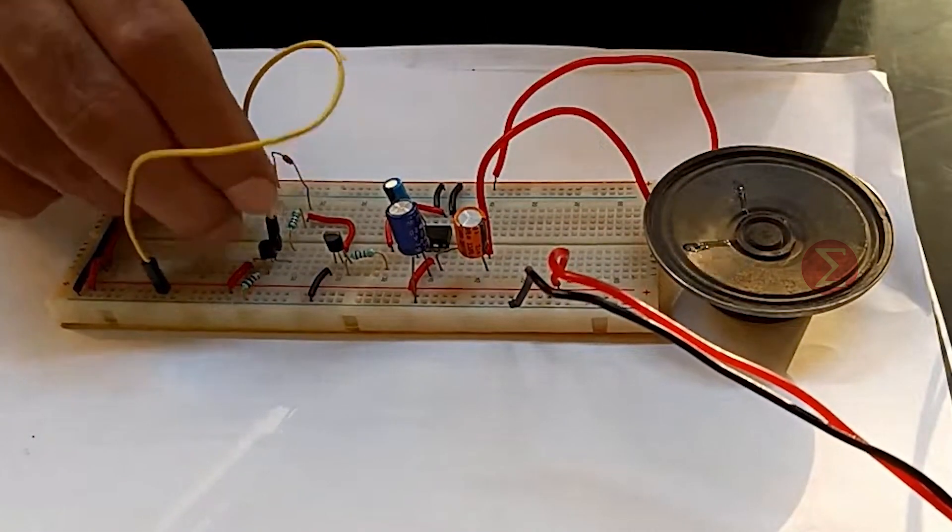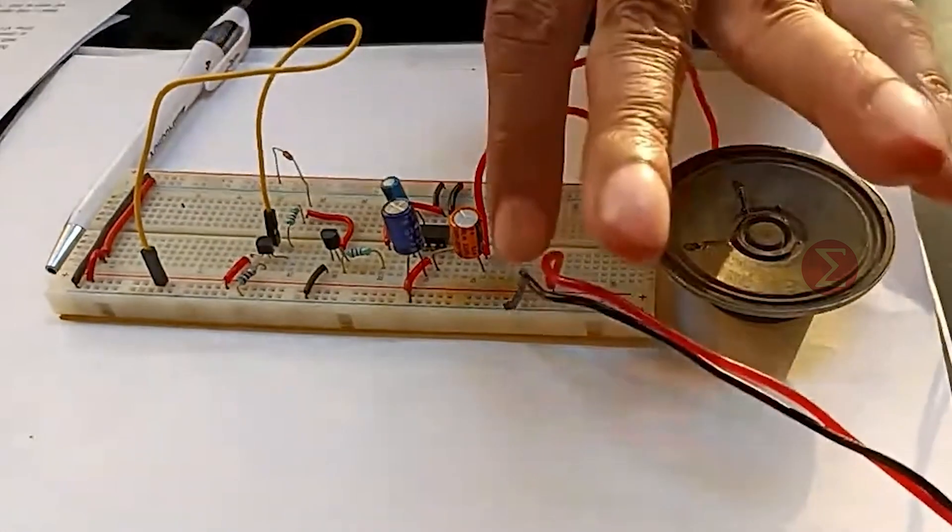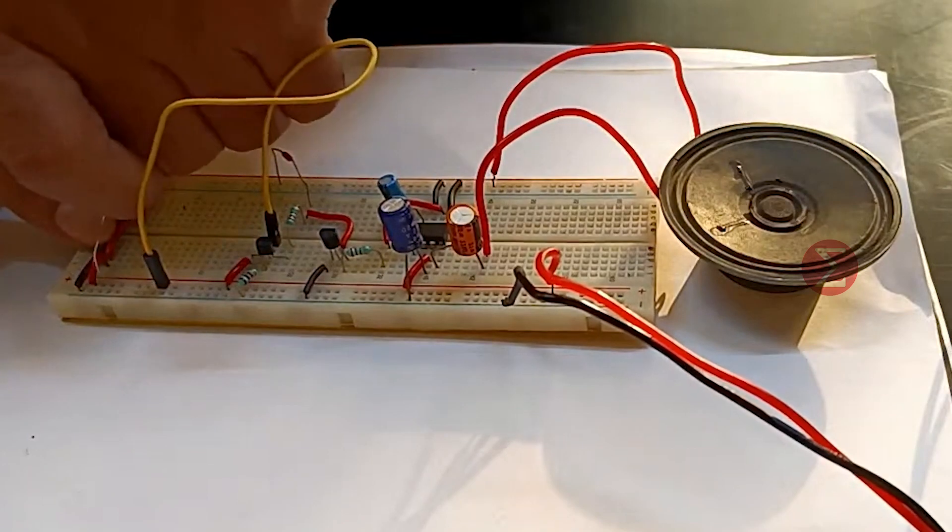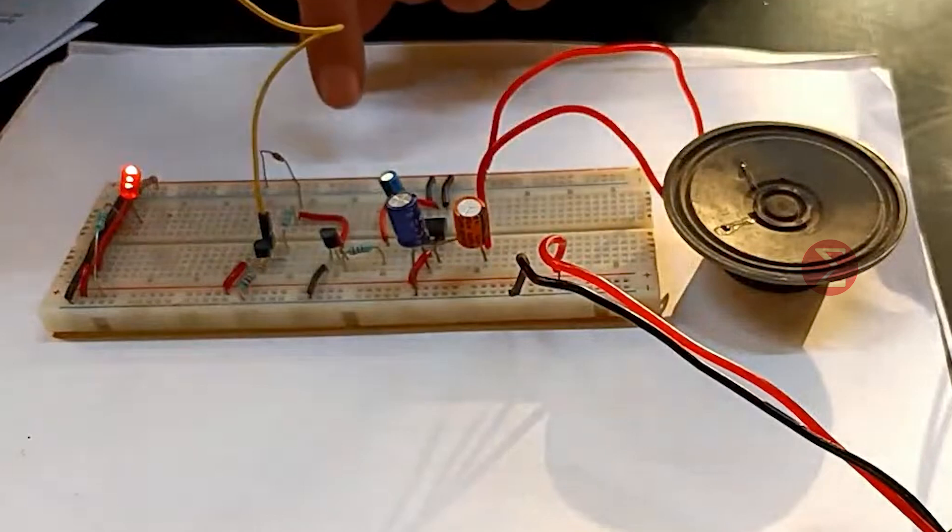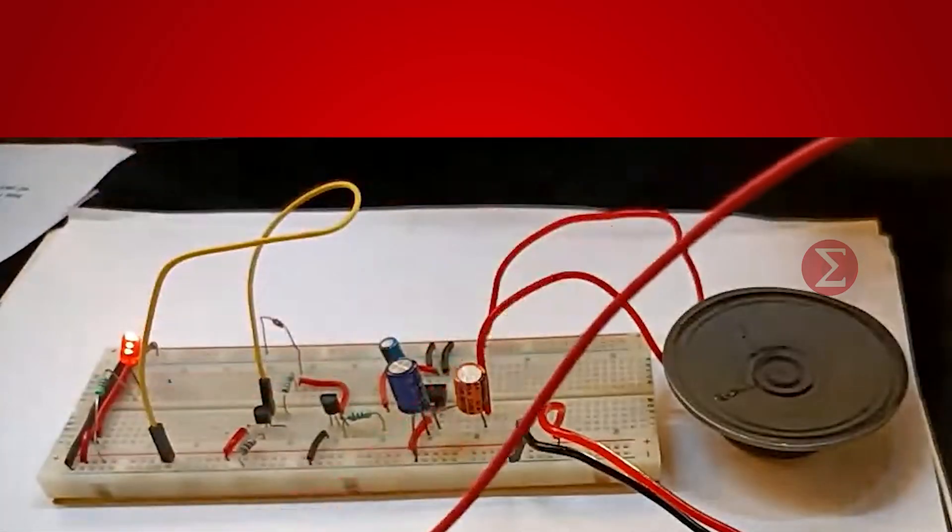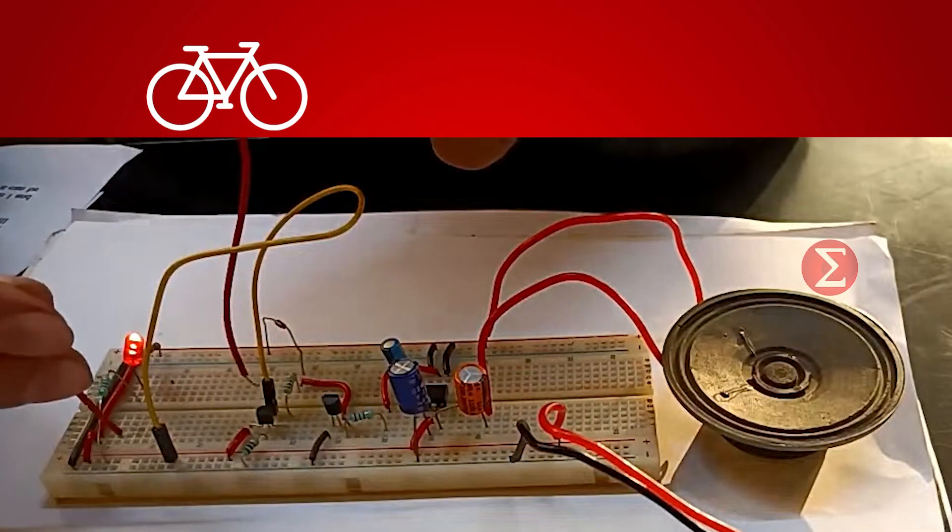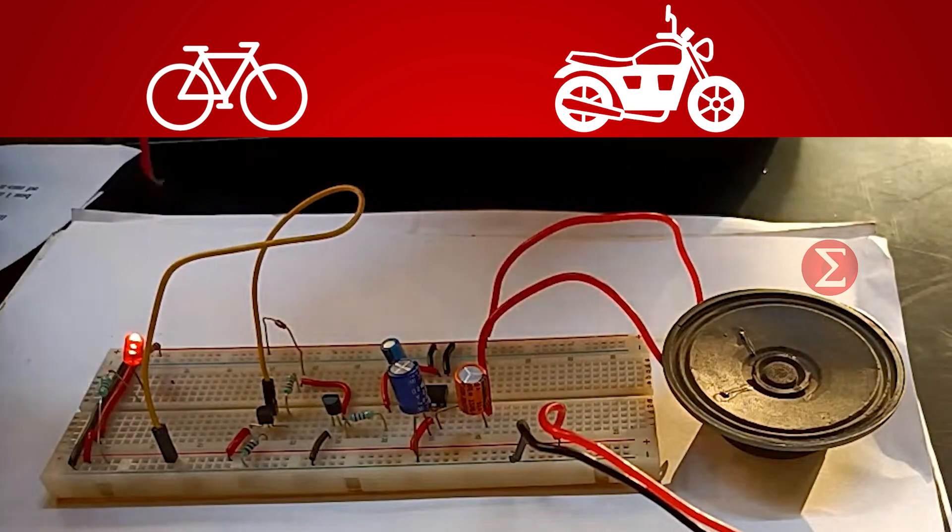Let us see the demonstration of this project. First turn on the power supply. You can use one resistor and LED to indicate the power supply is on. On disconnecting the loop you can hear the alarm. You can surround this loop in your cycle or bike and whenever someone tries to take your cycle or bike an alarm will blow.